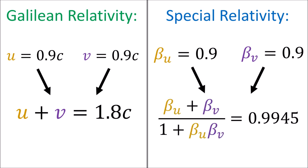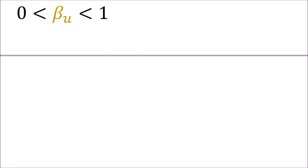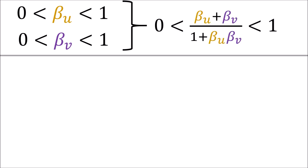So even though in Galilean relativity adding velocities of 0.9c and 0.9c ends up going faster than the speed of light, in special relativity with this new velocity addition rule the two velocities don't add together to exceed the speed of light. It turns out that if these two beta coefficients are between 0 and 1, their combined velocity according to special relativity will also be between 0 and 1.